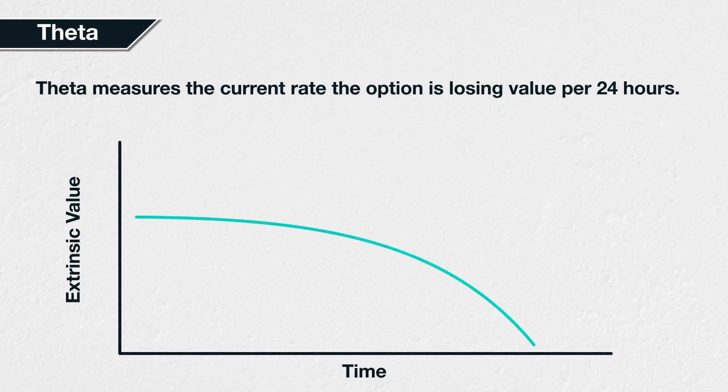Assuming all options share the same expiry date, options with more extrinsic value to lose — at-the-money options — will lose more dollars over a given time period than options with less extrinsic value to lose, such as in-the-money and out-of-the-money options. Notice that we are specifically talking about extrinsic value here, not the total option price, which also includes intrinsic value. This is because time has no effect on the intrinsic value of an option — intrinsic value is simply a reflection of how far in the money the option is.